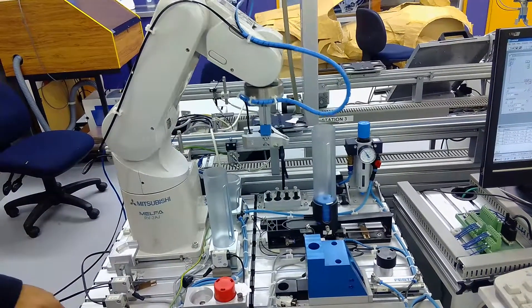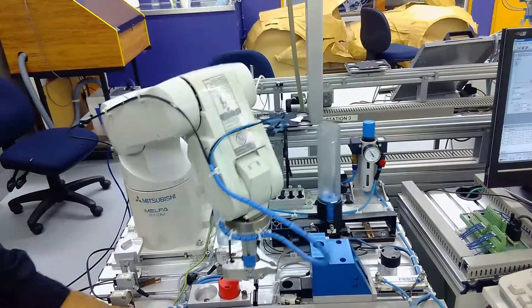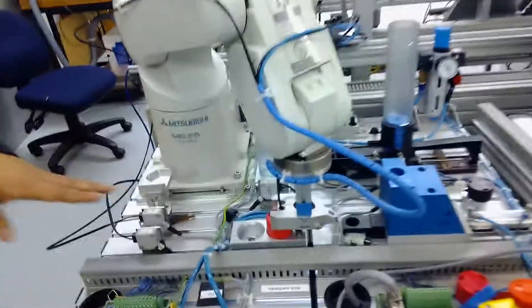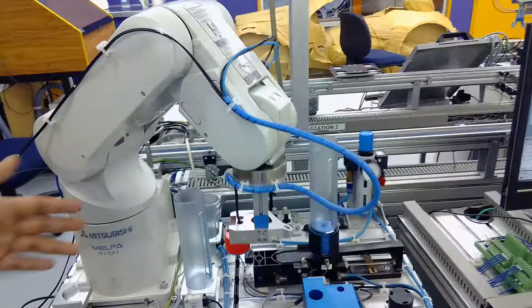Now it will wait for 2 seconds and again come back to position C to pick the disc. The grip speed is limited because we don't need any accident to happen.